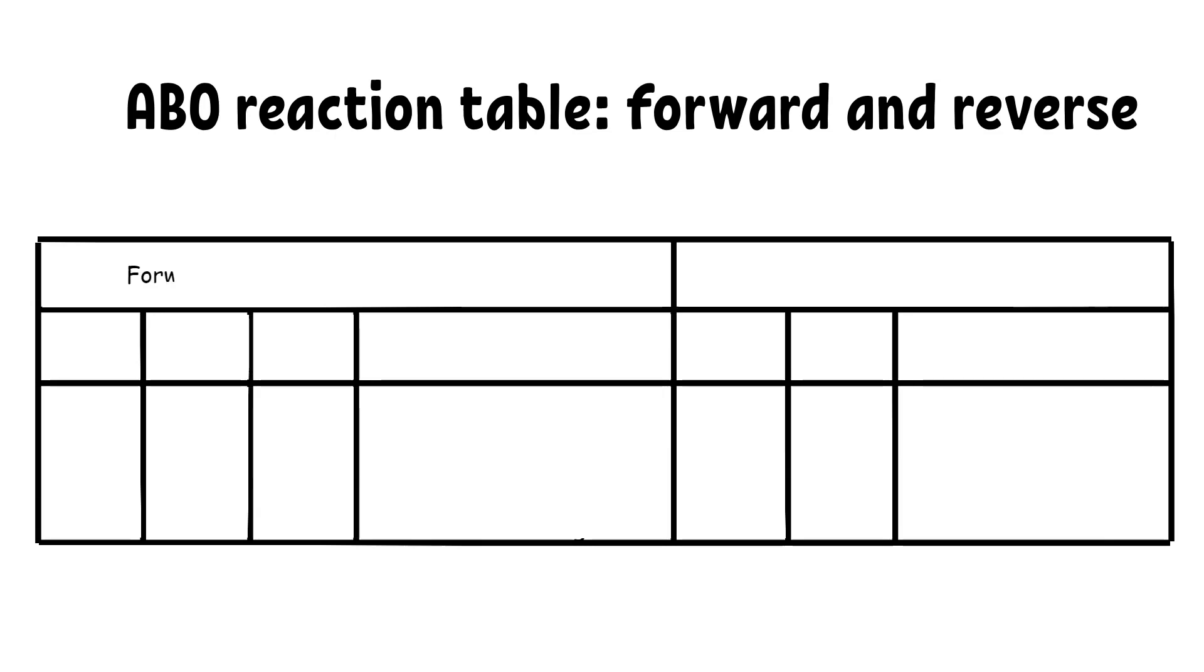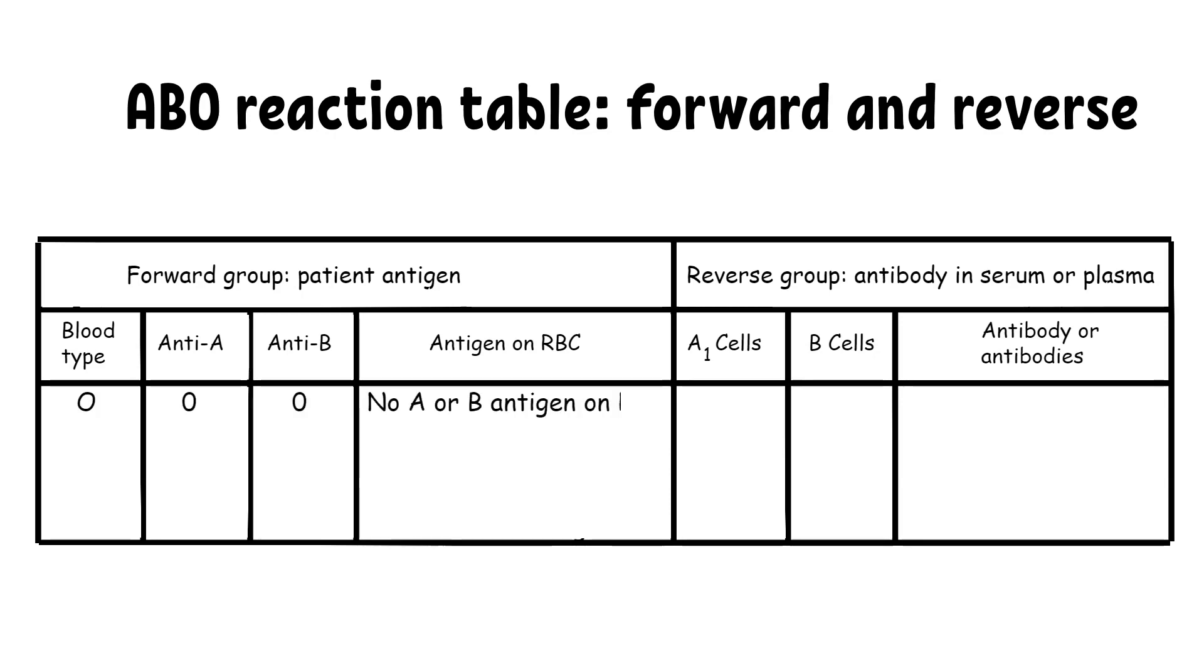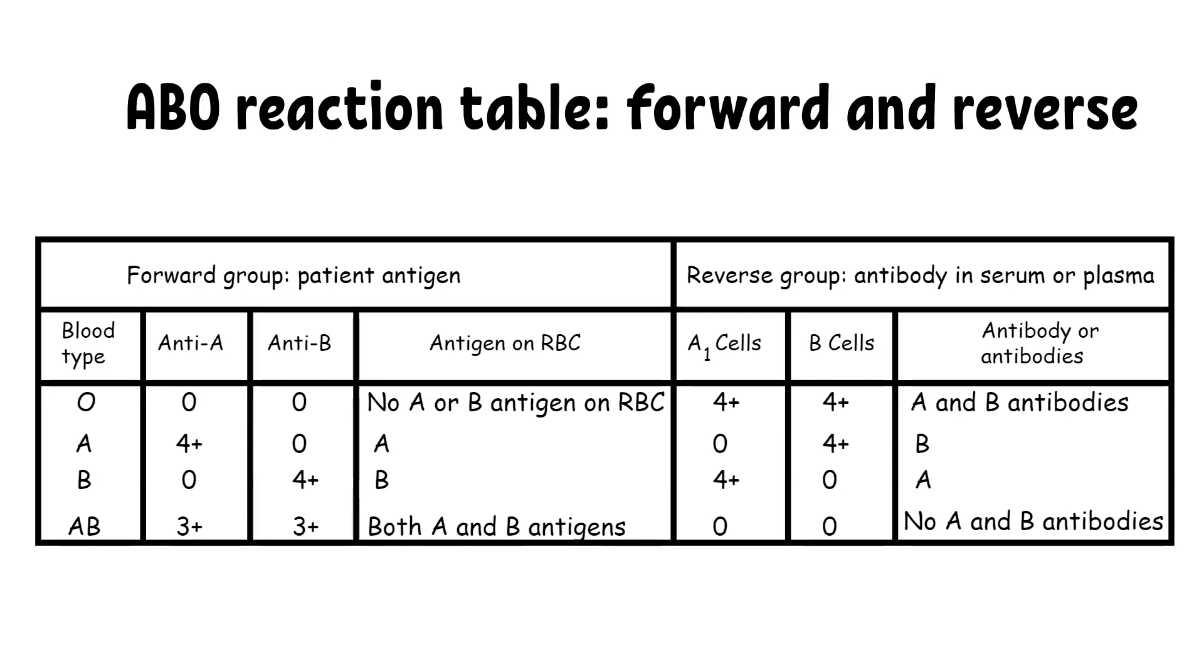Before talking about unexpected reactions for the subgroups, we should know what we are really looking for first. In most patients, these are the reactions that we will expect to see when performing ABO typing tests. This is a summary table of how the reaction should look like for each blood group. The testing procedures and methodology will follow in the next video.